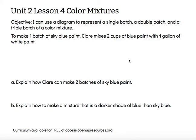To make one batch of sky blue paint, Claire mixes two cups of blue paint and one gallon of white paint. I'm going to represent this using a simple diagram. I'm going to use two small blue squares to represent the blue paint, and one larger white square to represent the one gallon of white paint. Cups are much smaller than gallons, so I did want to somewhat demonstrate that with my diagram.